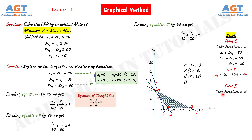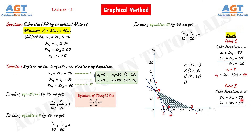Similarly, for point D, it is at the intersection of line 2 and line 3. So if we solve equation 2 and equation 3, we get the coordinates of point D. To solve, we multiply equation 2 by 3 on both sides. Subtracting equation 3 from this new equation 2, we get 5x1 equals 30, so x1 equals 6. Putting x1 equals 6 into either equation, we get x2 equals 12. Thus, point D is (6, 12).